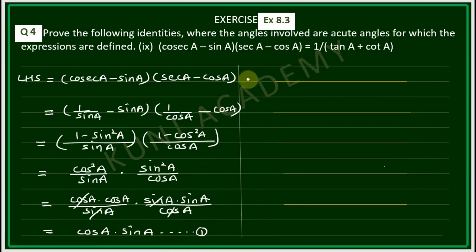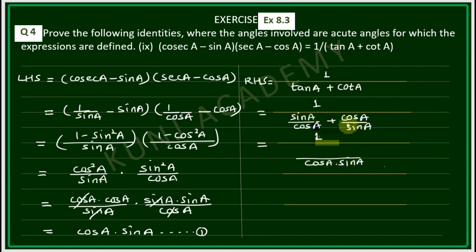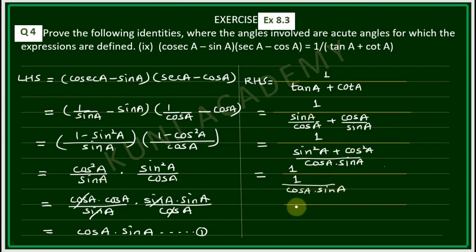Now the right hand side: 1 upon (tanA + cotA). Writing tanA as sinA/cosA and cotA as cosA/sinA, and taking LCM cosA·sinA in the denominator: sin²A + cos²A over cosA·sinA. Since sin²A + cos²A = 1, this becomes 1 upon (1/(cosA·sinA)) = cosA·sinA.